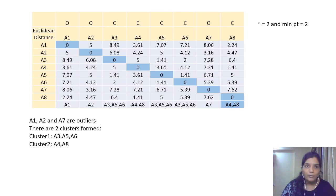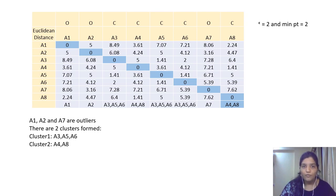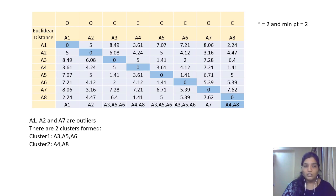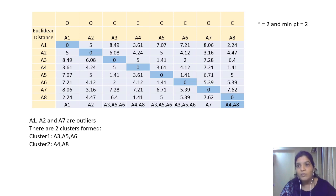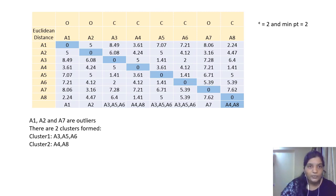A8 has 2 points within its epsilon distance, which equals the minimum points, and so it is a core point. In summary: A1, A2, and A7 are outliers. Two clusters are formed: Cluster 1 containing A3, A5, A6 and Cluster 2 containing A4 and A8.